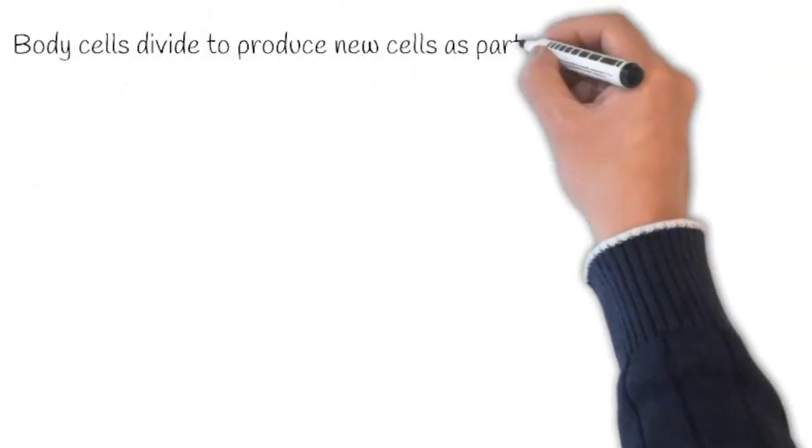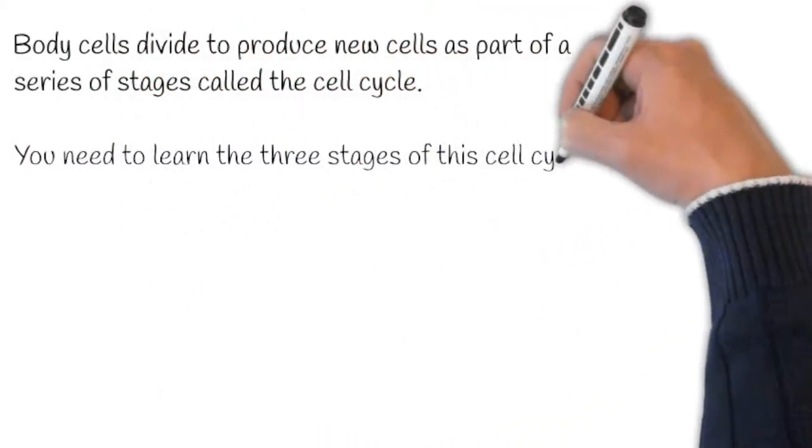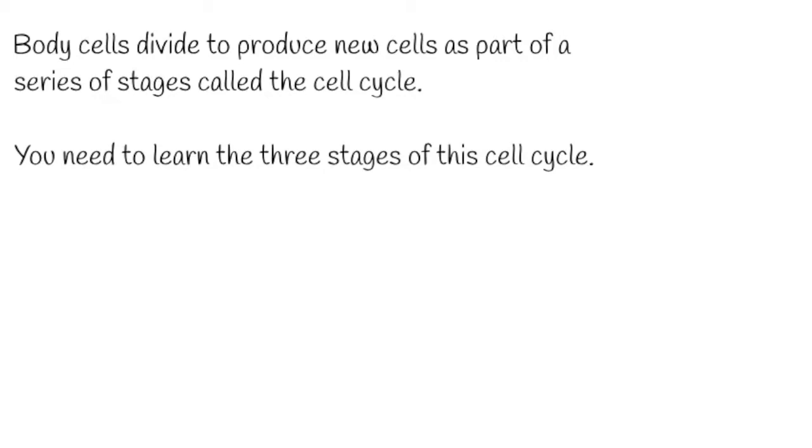Body cells divide to produce new cells as part of a series of stages called the cell cycle. You need to learn three stages of this cycle.